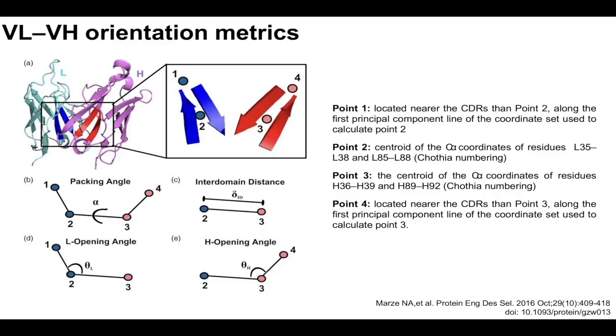And so they start by defining a point in the heavy chain and a point in the light chain. That's just the central point in a set of, I think it's six residues, six residues in the light chain and six residues in the heavy chain. They draw two points and the distance between those points is called the inner domain distance. And then they draw two more points that are basically the first principal component for each of the six points, so you just travel in that direction for a certain distance.